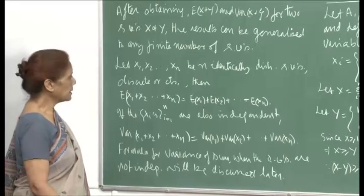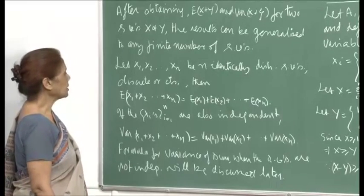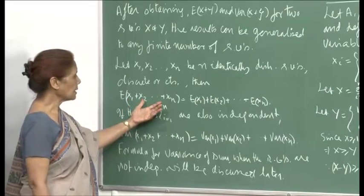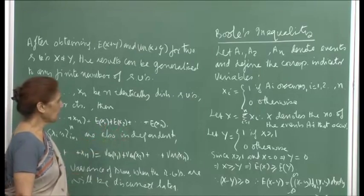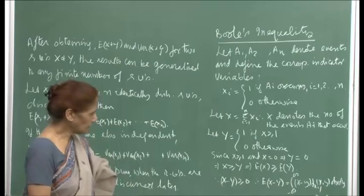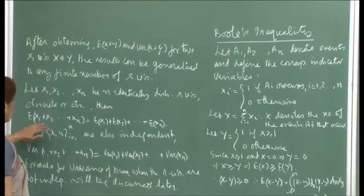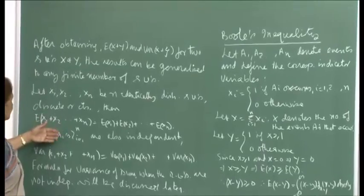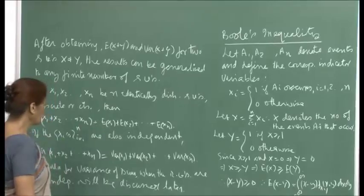If X1, X2, ..., Xn are n identically distributed random variables, discrete or continuous, then E(X1 + X2 + ... + Xn) = E(X1) + E(X2) + ... + E(Xn). That is, the expectation of the sum equals the sum of the expectations.